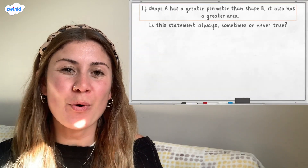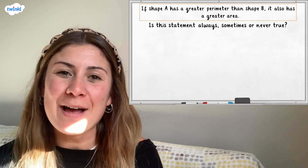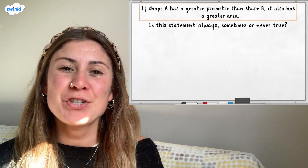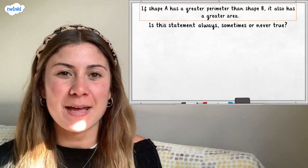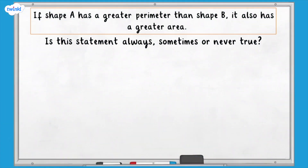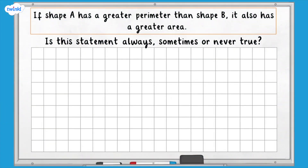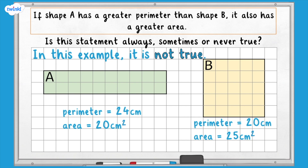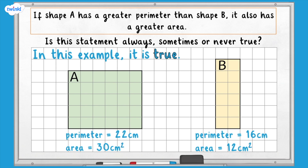Now it's time for a challenge. If shape A has a greater perimeter than shape B, it also has a greater area. Find examples to explain your answer, and you might also find it useful to use squared paper. This statement is sometimes true. Here is an example where it isn't true, and here is an example where it is true.